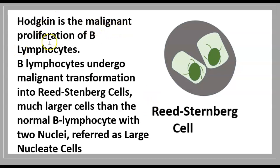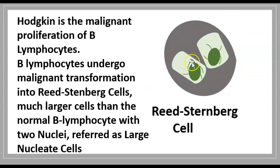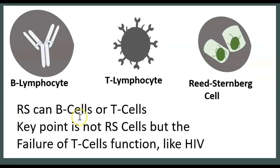Hodgkin's Lymphoma is the malignant proliferation of B lymphocytes. B lymphocytes undergo a malignant transformation into Reed-Sternberg cells. Basically, B lymphocytes get attacked and mutated into Reed-Sternberg cells. These cells are much larger than B lymphocytes, and they have two nuclei — they are called binucleate cells.